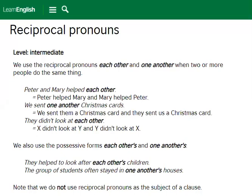Reciprocal pronouns. We use the reciprocal pronouns 'each other' and 'one another' when two or more people do the same thing. 'Peter and Mary helped each other' — Peter helped Mary and Mary helped Peter. 'We sent one another Christmas cards' — we sent them a card and they sent one to us. We also use the possessive forms 'each other's' and 'one another's': 'They helped to look after each other's children.' 'The group of students often stayed in one another's houses.'